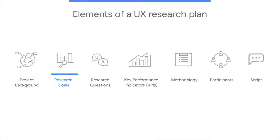Now let's move on to the second element of a research plan: research goals, also called research objectives. Research goals state the specific ideas you want to learn from the research, or what you'd like the outcomes to be. Research goals help you understand the bigger picture of doing this research and why identifying them is so important — essentially, they drive the entire study.